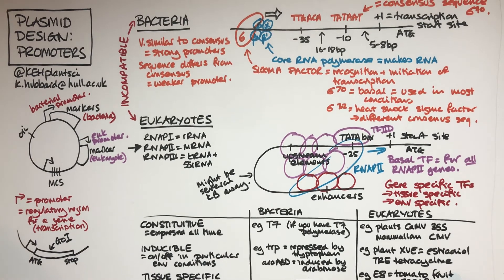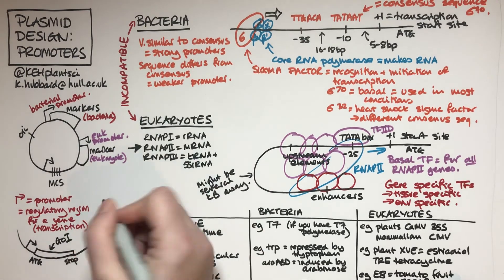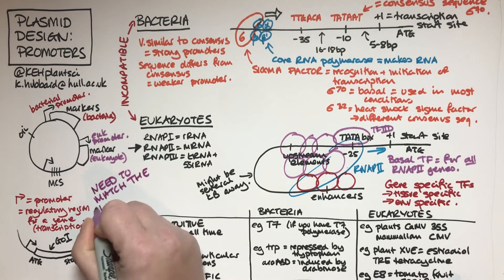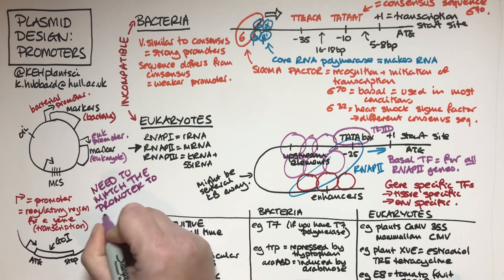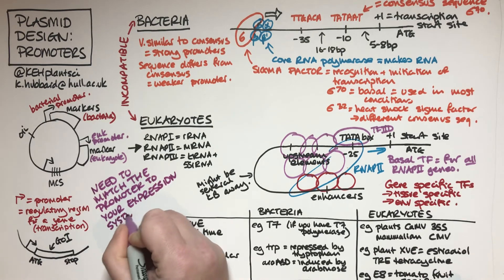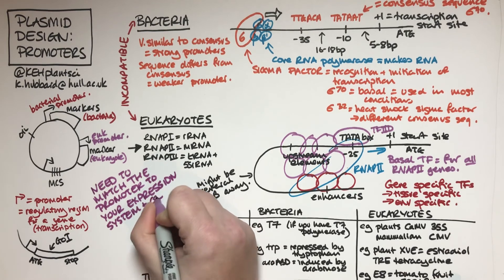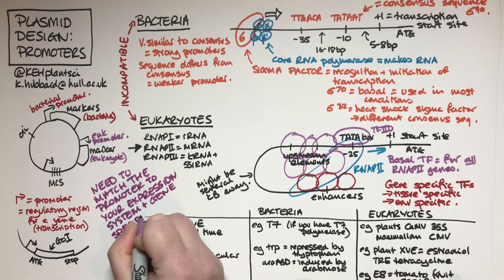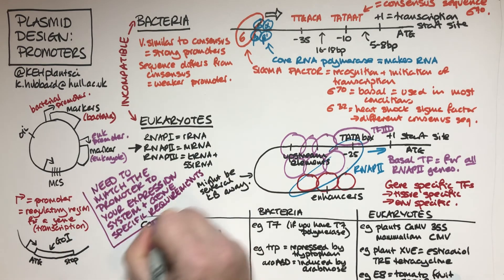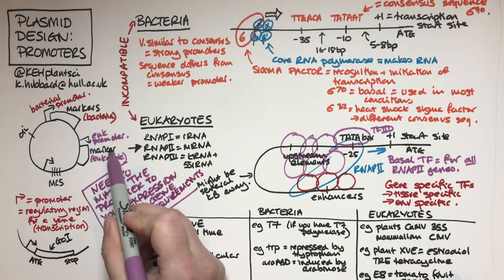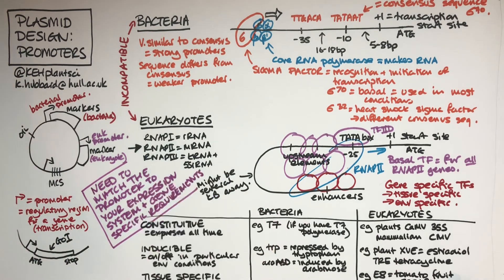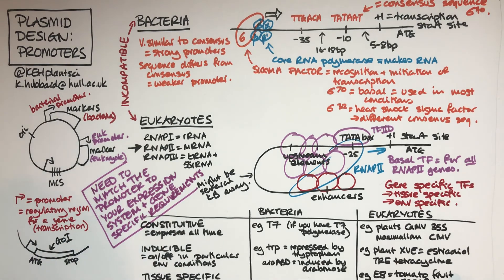The important thing is that you have the right promoter for where you're trying to express your genes. If you want to express in a bacterium, you need a bacterial promoter; in a eukaryote, you need a eukaryotic promoter. You have a choice of types: constitutive, switched on all the time; inducible, switched on or off in particular conditions; or tissue-specific if you're working in a eukaryote. The most important thing is to match the promoter to your expression system and your gene-specific requirements.